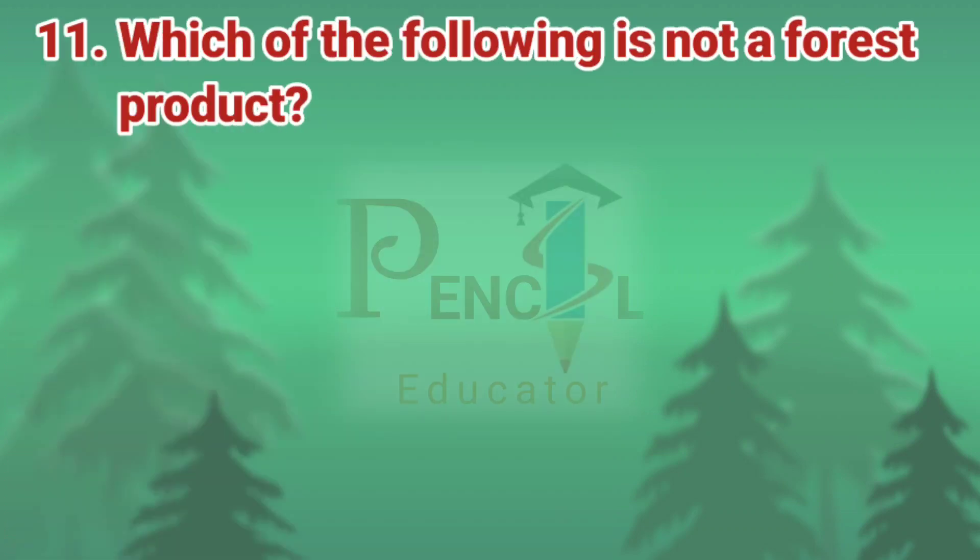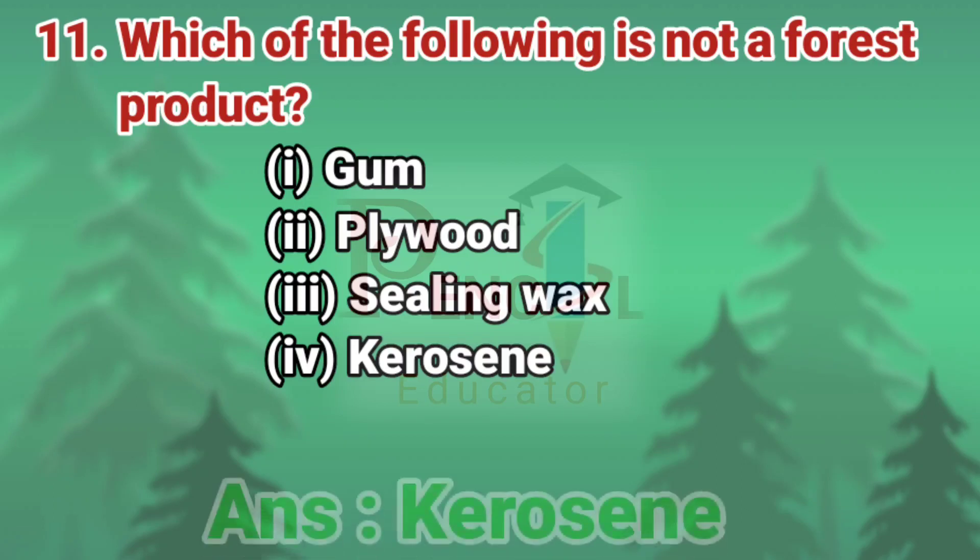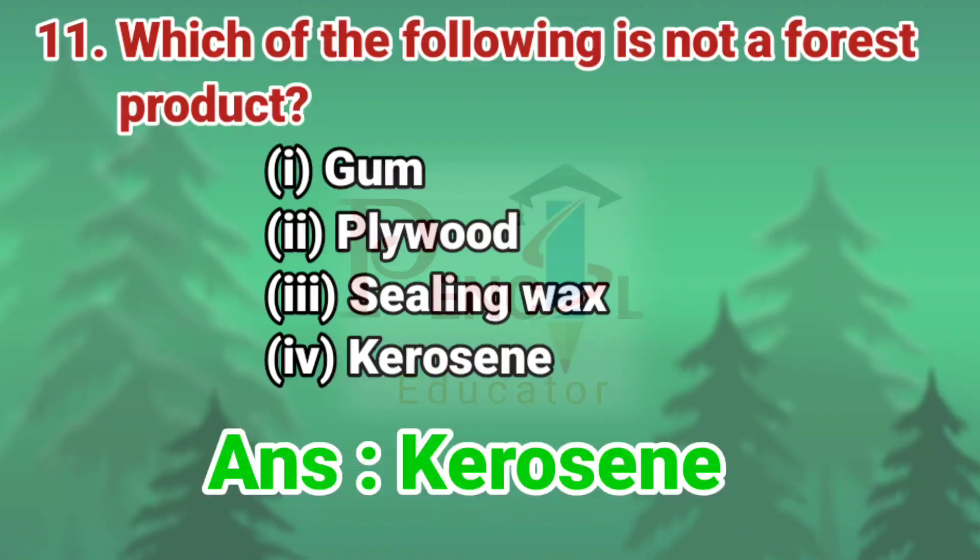Eleventh question: Which of the following is not a forest product? Gum, plywood, sealing wax, kerosene. The correct answer is kerosene.